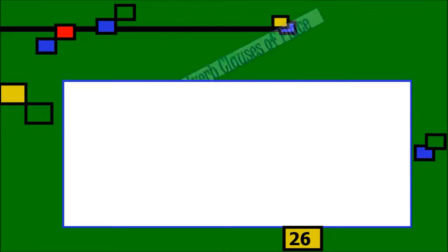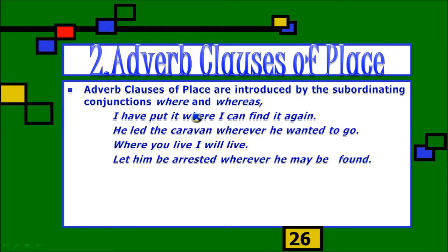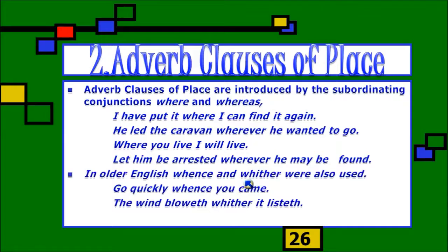Now we shift to adverb clauses of place, which speak of place. The subordinating conjunctions that usually introduce them are 'where' and 'whereas.' For example: 'I put it where I can find it again' — the clause 'where I can find it again' is the adverb clause of place. In older English, 'whence' and 'whither' were also used, though we don't use them nowadays. You may still find them in older books.